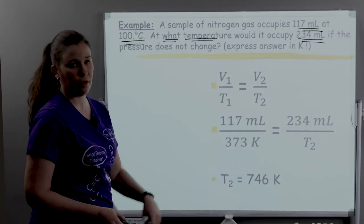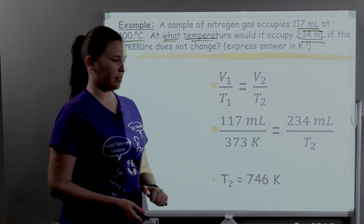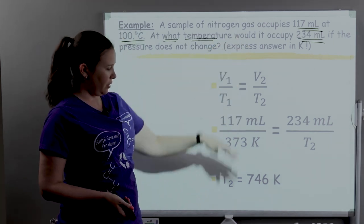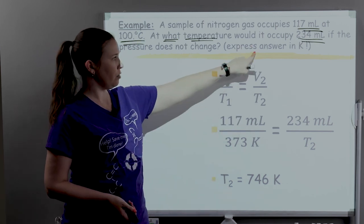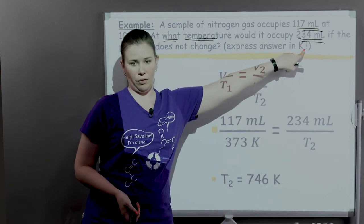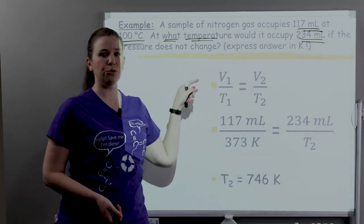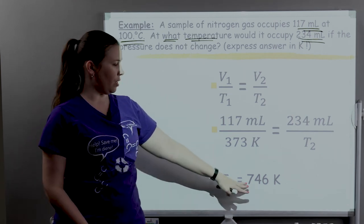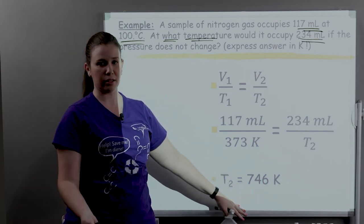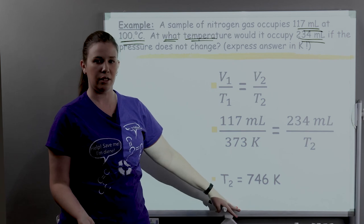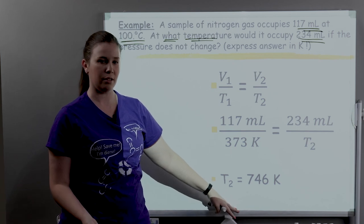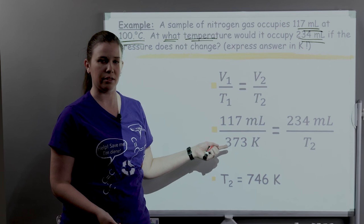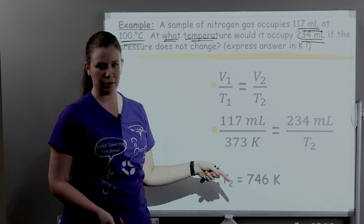We get 746 Kelvin. This question asked to express it in Kelvin. If they ask for degrees Celsius, you still have to work the problem in Kelvin, and then once you get your answer, simply subtract 273 to get the answer in degrees Celsius. You will get the wrong answer — particularly if it's a negative degrees Celsius — if you work the problem in Celsius.